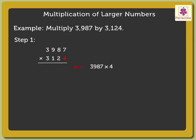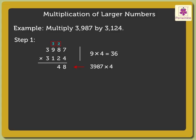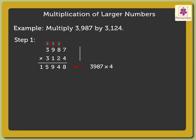7 into 4 is equal to 28. 8 into 4 is equal to 32. 9 into 4 is equal to 36, plus the carried over 3 is equal to 39. Now, 3 into 4 is equal to 12, plus the carried over 3 is equal to 15. We will call 15,948 as the first partial product.